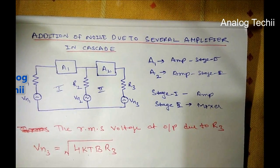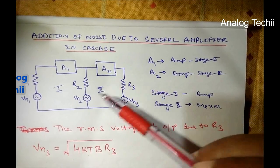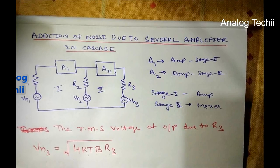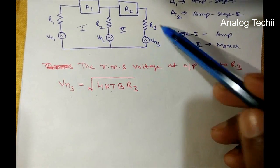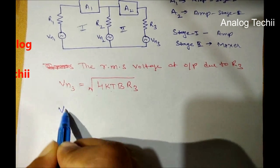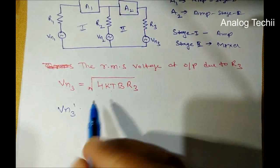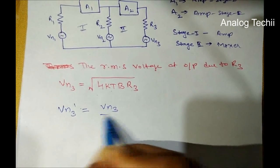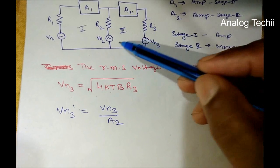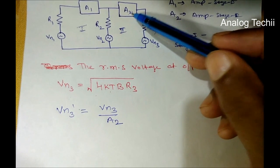Now, some noise voltage would be present at the output even if there were no R3. Assuming there is no R3, but still due to amplifier E2, some noise voltage must have been generated. When R3 is not present, let us assume that R3' was present instead. With respect to R3', the voltage VN3 will be replaced by VN3', and VN3' is generated from amplifier E2. So we can replace VN3 as VN3 divided by E2.